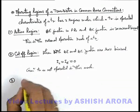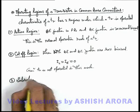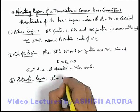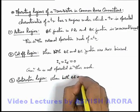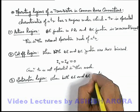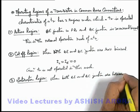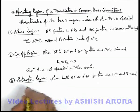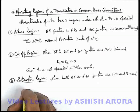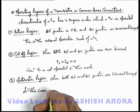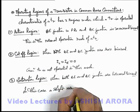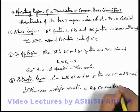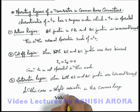The third region in which a transistor can be operated is the saturation region. This is a region when both the base-emitter and base-collector junctions are forward biased. When both of these junctions are forward biased, they are said to be in the saturation region. The most important thing we have studied in the characteristic is that in this case, a slight variation in VCB causes a large variation in IC.